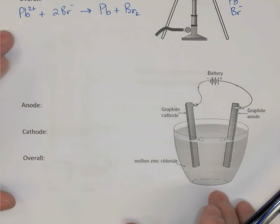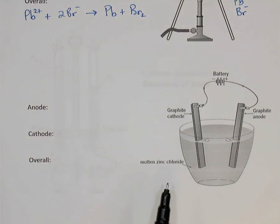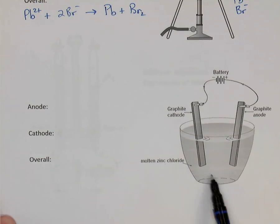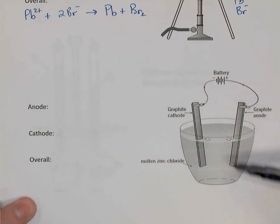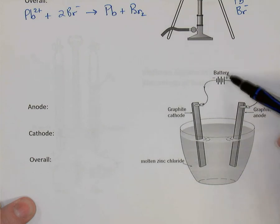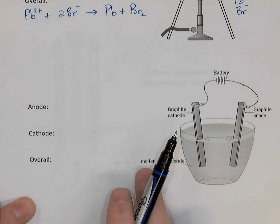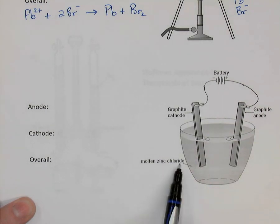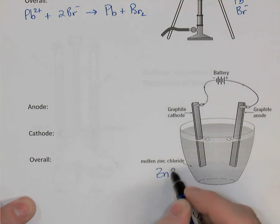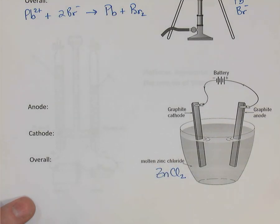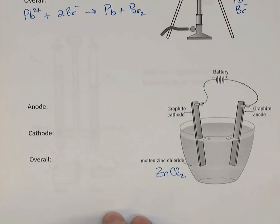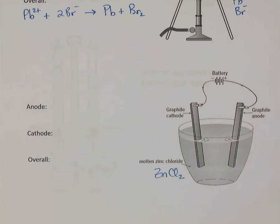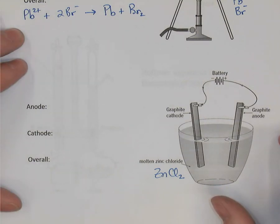See if you can repeat what we just did with this next example: molten zinc chloride in a dish, with two electrodes and a battery — another electrolytic cell. Zinc chloride's formula is ZnCl2. Try to label the electrolytic cell the way we did above, figure out the reactions at the anode and cathode, what's being produced there, and what the overall reaction would be.